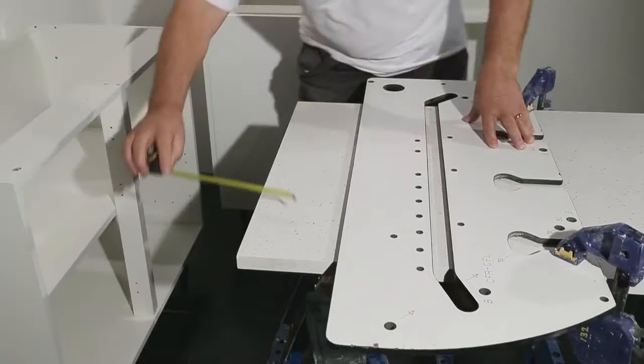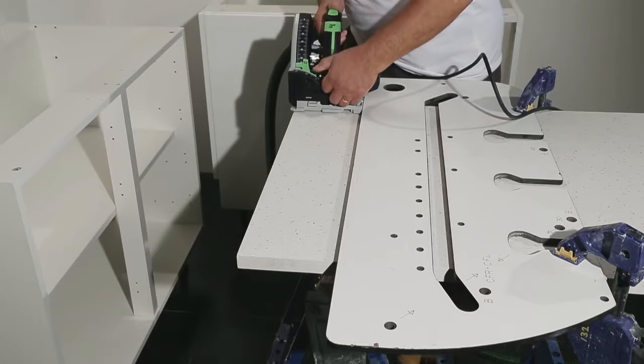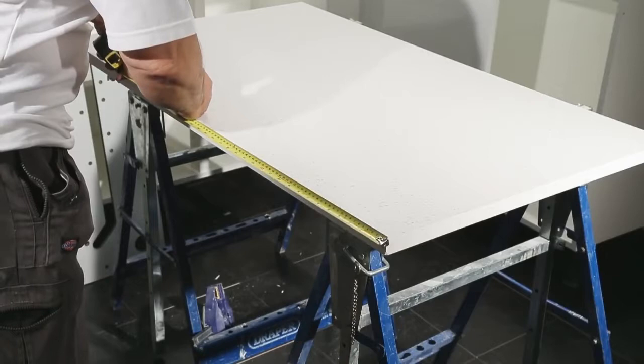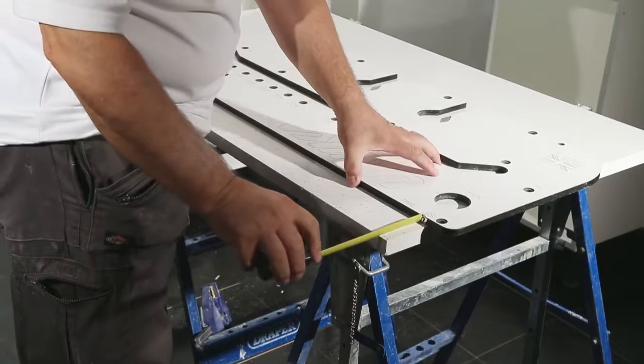The measuring process is exactly as you would do with other work surfaces. Here we are simply trimming the Minerva to size using a circular saw. Next, a straight edge is clamped to the surface in order to cut the female side of the joint.